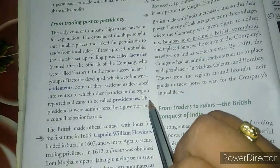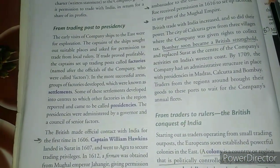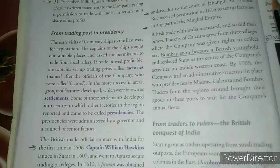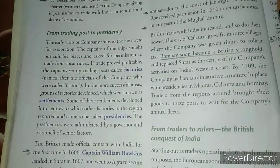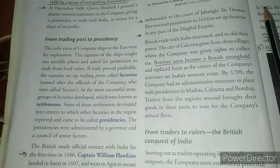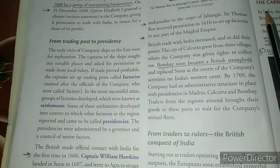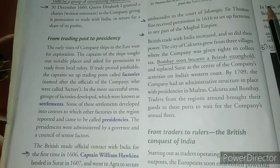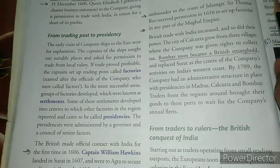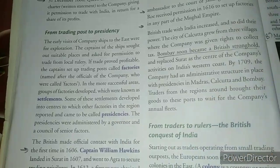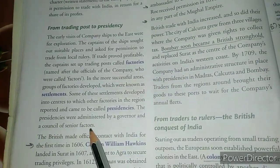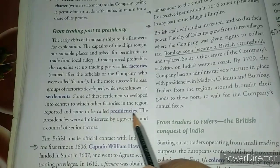Some of these settlements developed into centers to which other factories in the region reported, and came to be called presidencies. When Britishers came to India and took permission from local rulers, if trade became successful they would settle there — that was called a settlement. When a settlement grew and developed further, it ultimately became a presidency. The presidencies were administered by a governor and a council of senior factors.